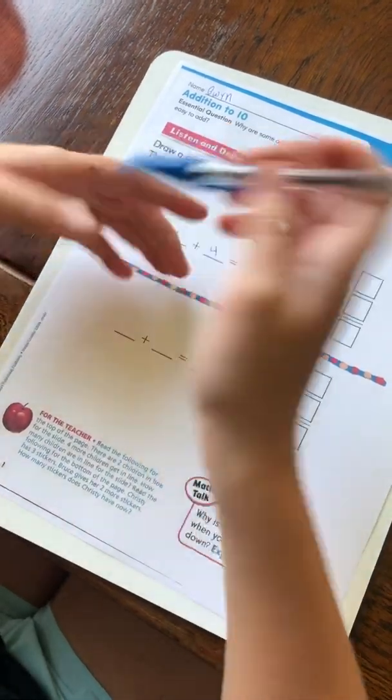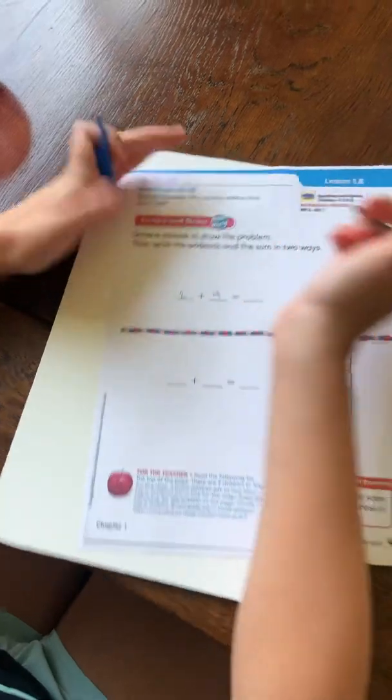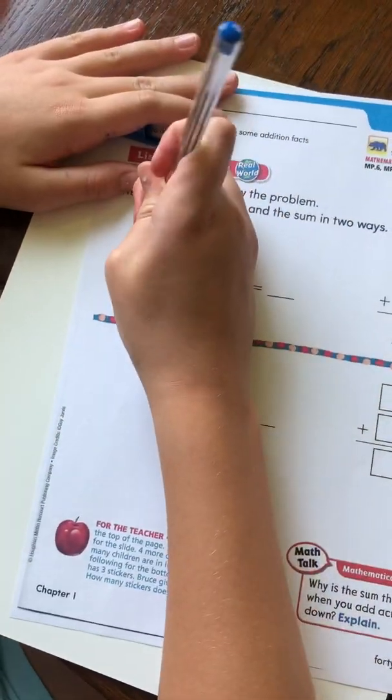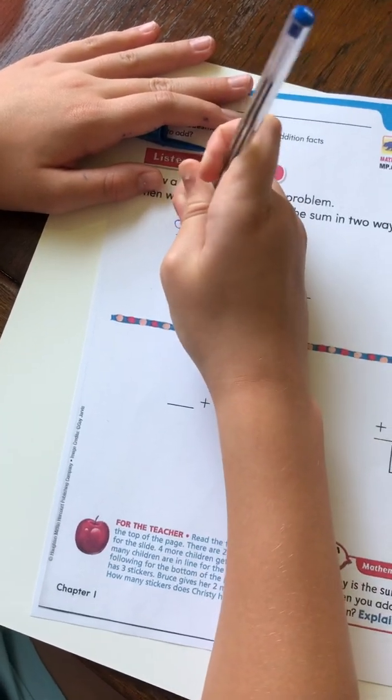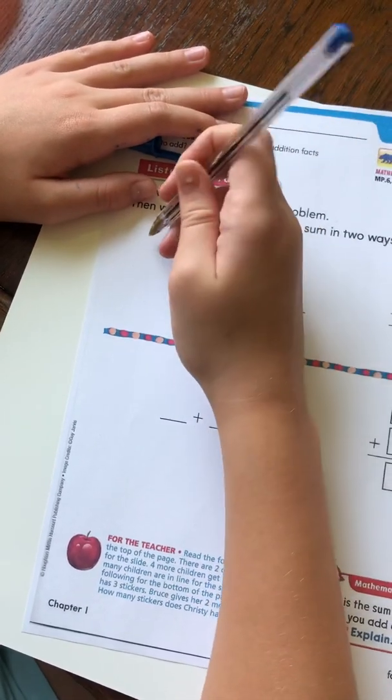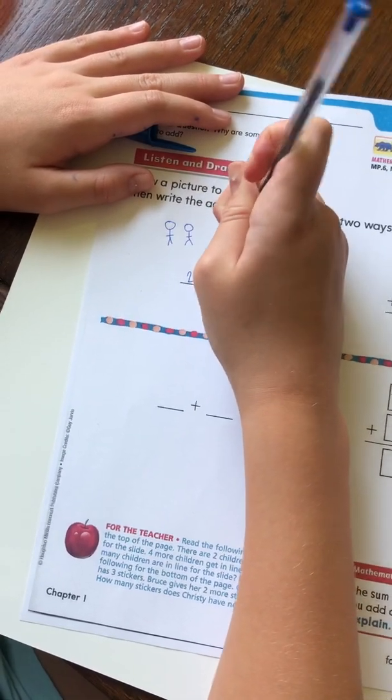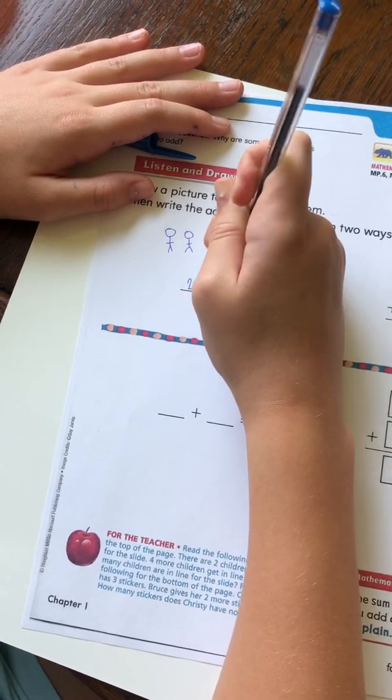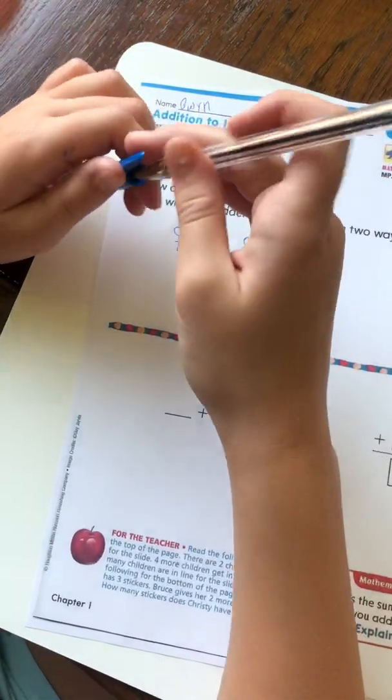Then it says... Well, how do you solve that? How do I solve it? Oh, I could do... Let's see, for example, if I want to draw stick figures for people. I could do one, two people. These two people are already in line. Then four more people come.